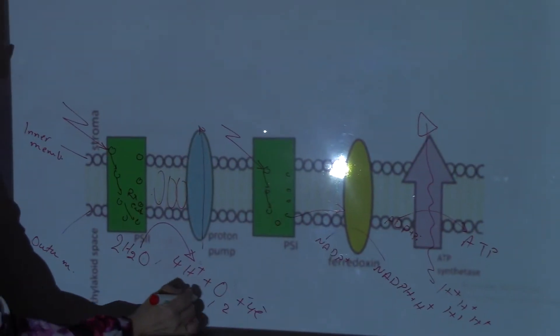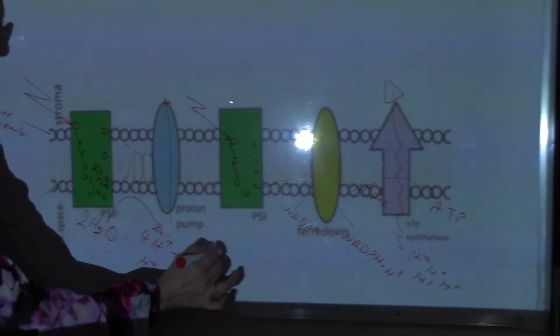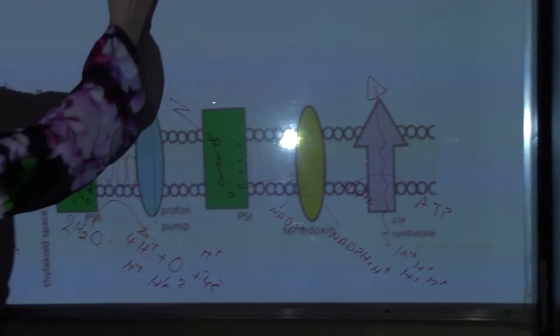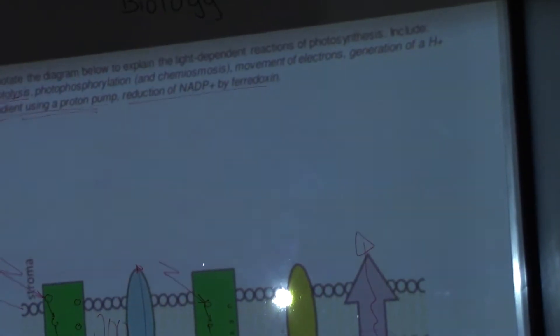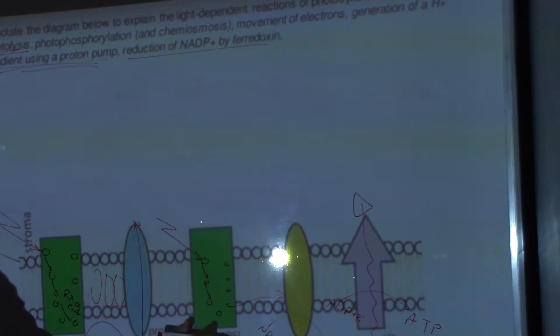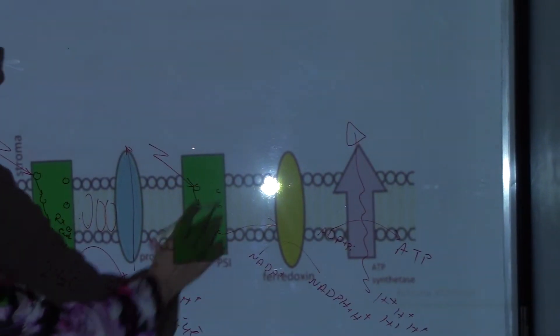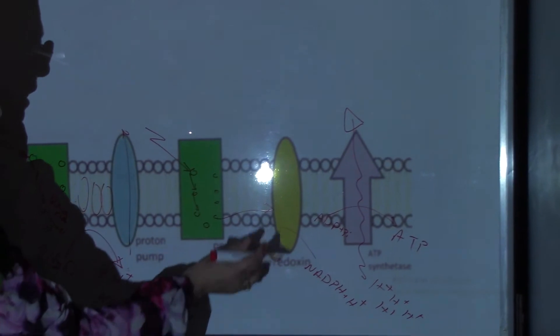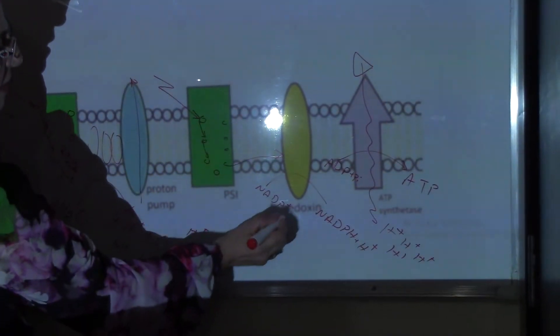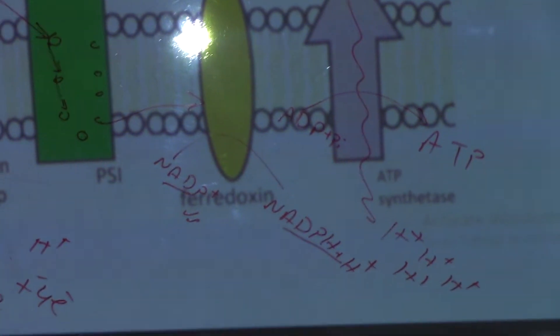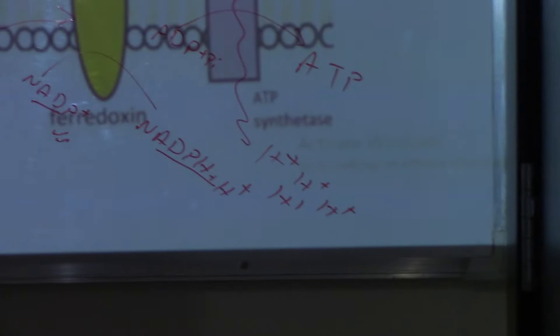The increase in proton concentration starts up here, establishing the proton gradient. Then, reduction of NADP by ferredoxin: the electrons fed into photosystem I will be taken by ferredoxin, which helps generate reduced NADP from NADP+.